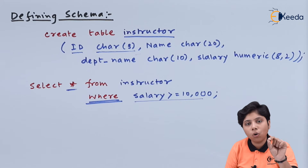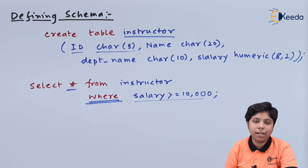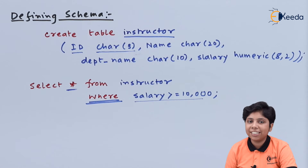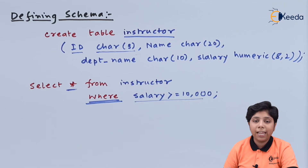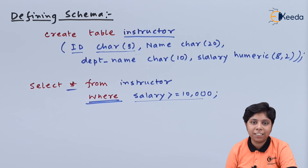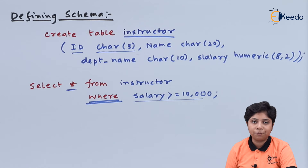That is the main advantage of a database over file-type processing. Since we are using a single relation or table in this example, we haven't specified any table name before the attribute name. However, if we are using multiple relations in the DML query, we have to use the table name as a prefix to the attribute name.